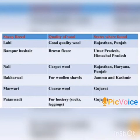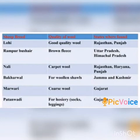Barwal sheep are used for obtaining wool for shawls, found in Jammu and Kashmir. Marwari sheep have coarse wool and are found in Gujarat. Patanwadi sheep — their wool is used for making hosieries, meaning socks and leggings — are found in Gujarat.